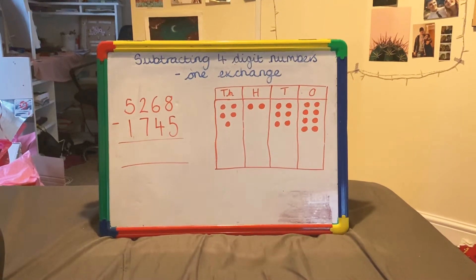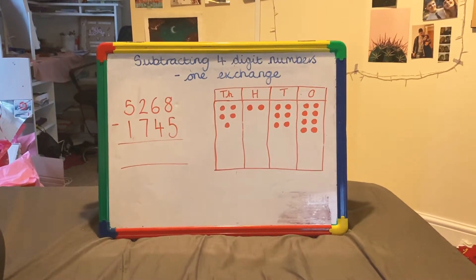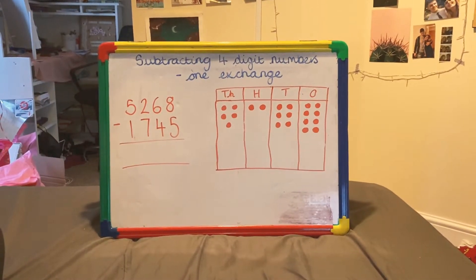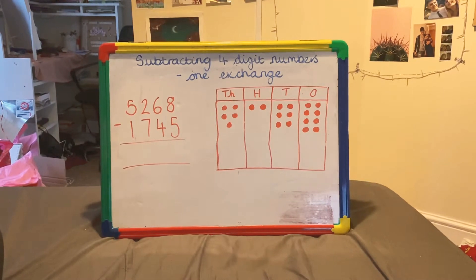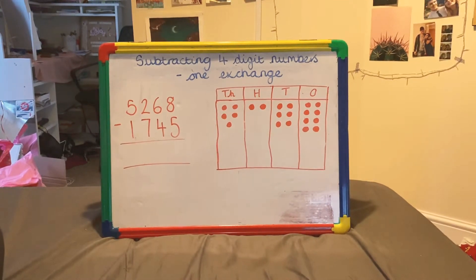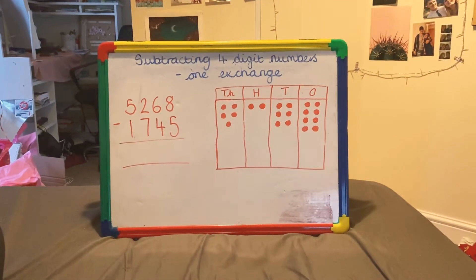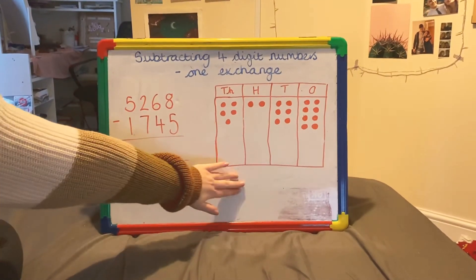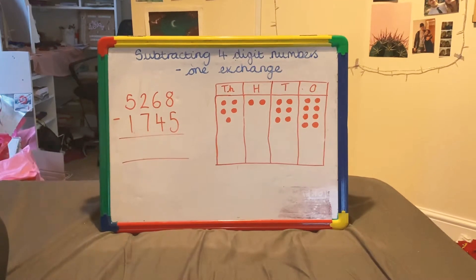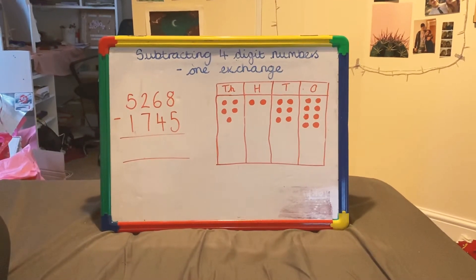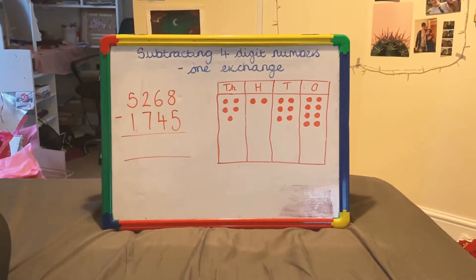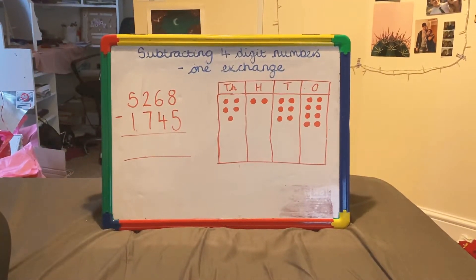Hi Year 4, today we are looking at subtracting 4-digit numbers with 1 exchange. First of all we will be using our place value chart to help solve this, and then we'll be looking at how to do our question in the column method.